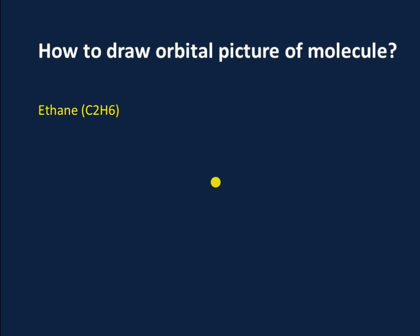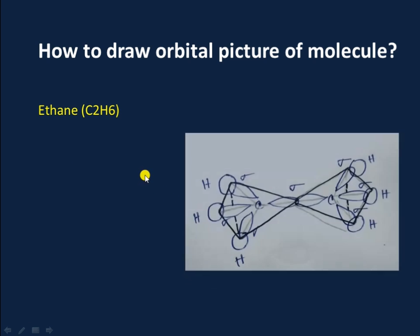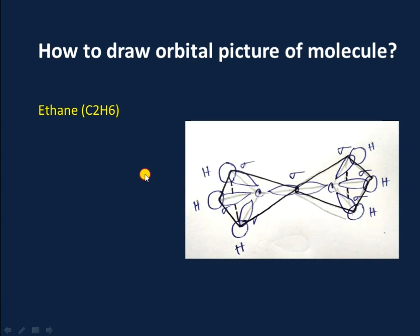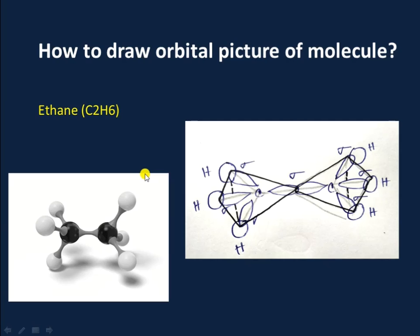First of all we will learn how to draw the orbital picture of ethane, that is C2H6. In ethane, two carbon atoms are sp3 hybridized and are of tetrahedral shape. Two sp3 hybridized orbitals of each carbon atom overlap head to head to form the ethane molecule, and the other hybridized orbitals are occupied by hydrogen atoms.